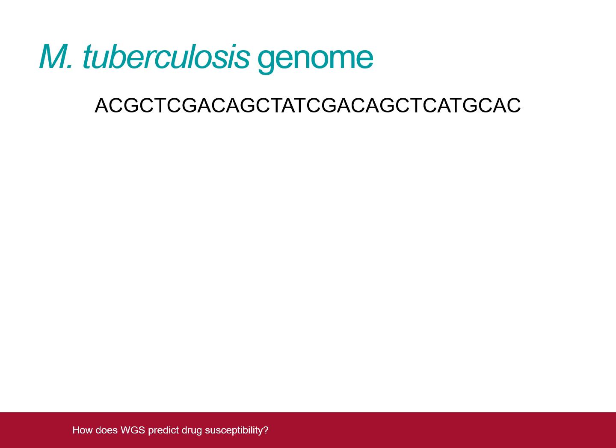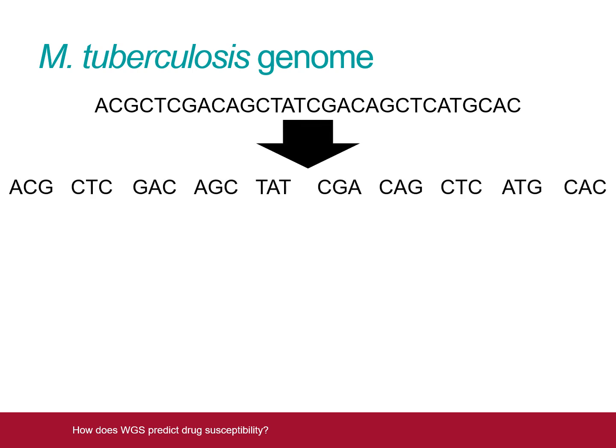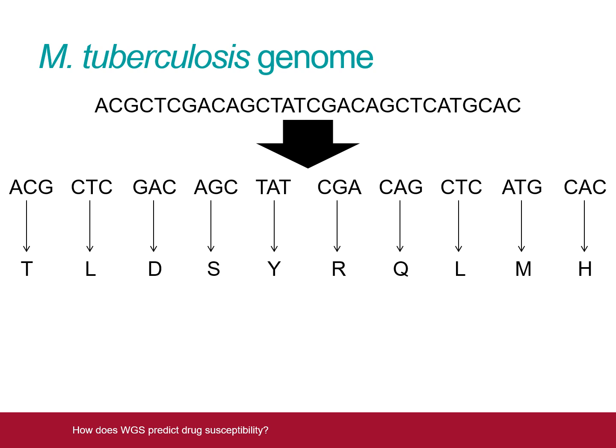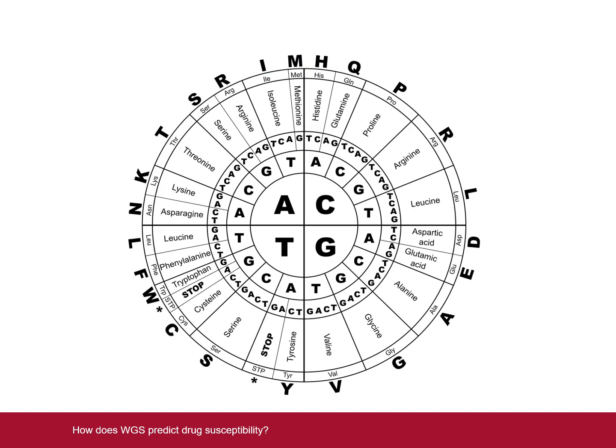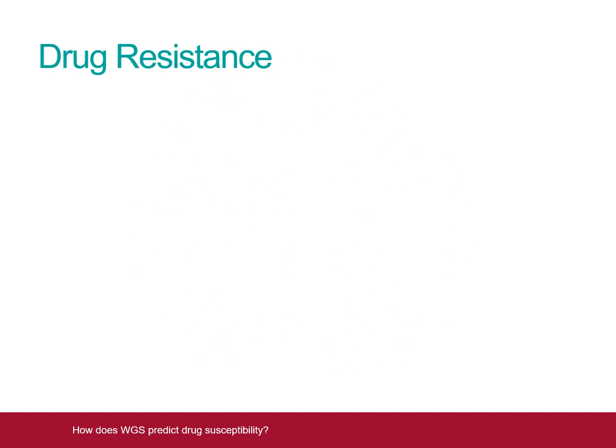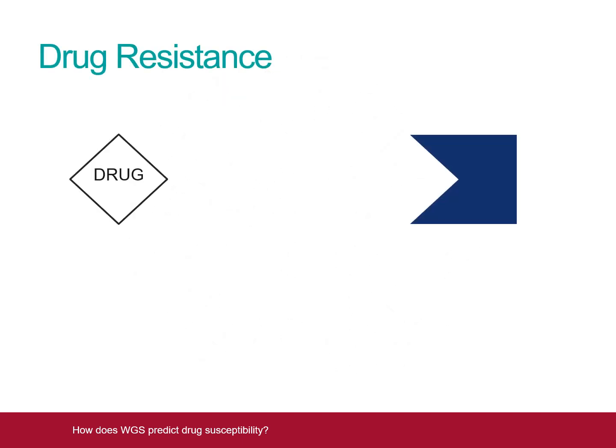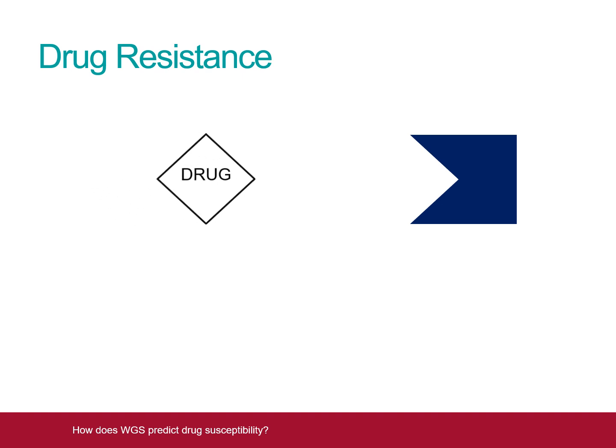Although the TB genome is one long, uninterrupted chain of bases, when it comes to producing the proteins that the cell needs to function, it can be regarded as a long chain of triplets of bases. These three-letter words, called codons, tell the bacteria in what order to put together the building blocks of proteins, called amino acids. The order of these building blocks determines the shape and function of the protein.